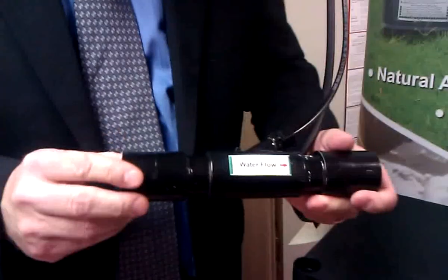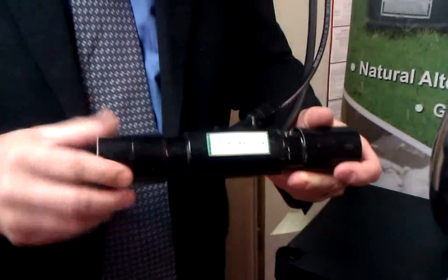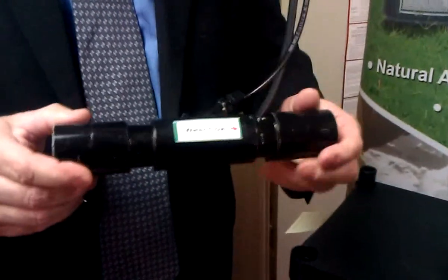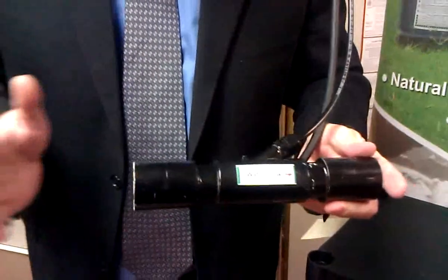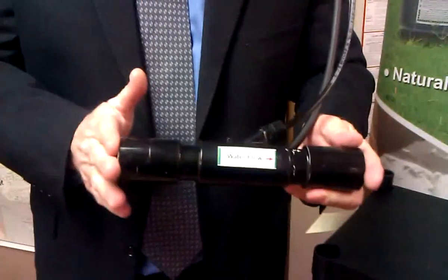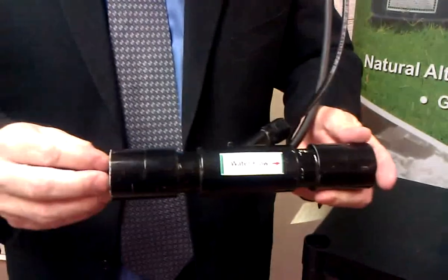...by installing our injection tube on your irrigation line. This particular model is a one-inch unit. It can be installed by cutting out about 12 to 14 inches of irrigation pipe and simply adding a slip fix to install it in line. Of course, it is directional.